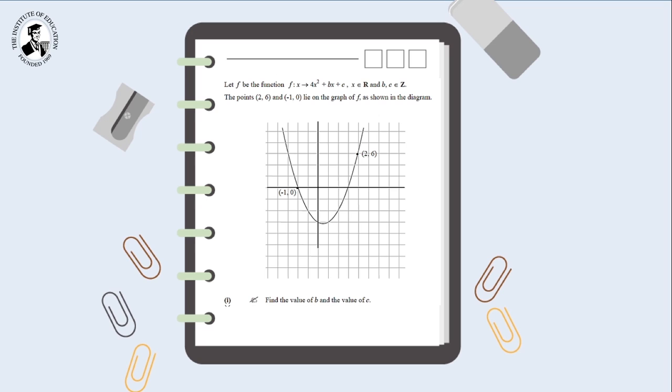We're told, let f be the function f colon x arrow is equal to 4x squared plus bx plus c, x is an element of r, and b and c are an element of z. The points 2, 6 and minus 1, 0 lie on the graph of f as shown in the diagram. In the diagram, we have what's clearly a quadratic function, the two points are plotted on it, and we're being asked to find the value of b and the value of c.